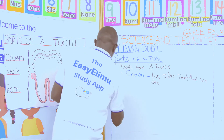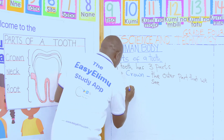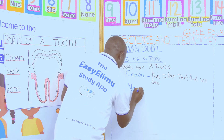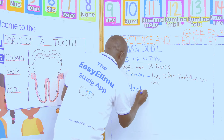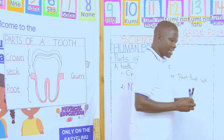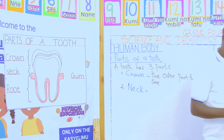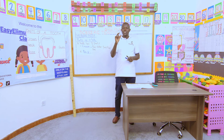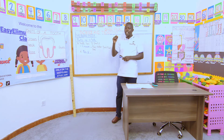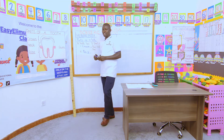Part number two from our chart is the neck. Neck is another part of our tooth, and this is the part joining the crown and the hidden part of the tooth - that is the root.